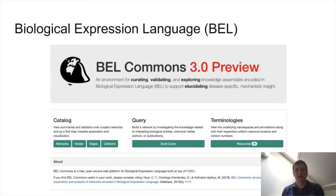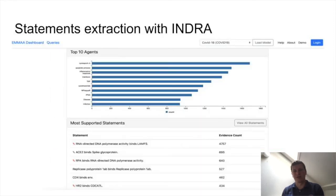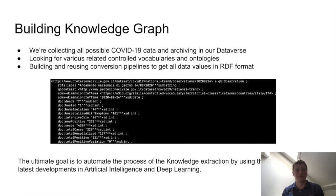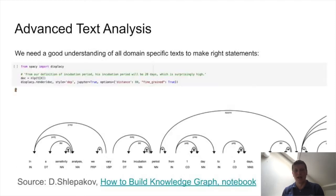Medical components like Biological Expression Language deployed as a service are combined with other tools for statement extraction. Our final goal is to create a knowledge graph for different disciplines like bioinformatics, economics, and social history, and link different ontologies at the basic level.